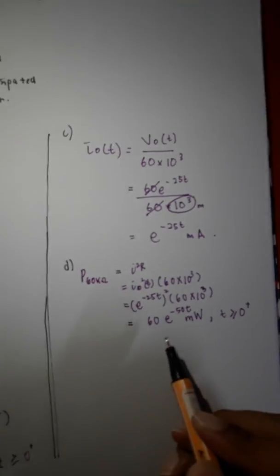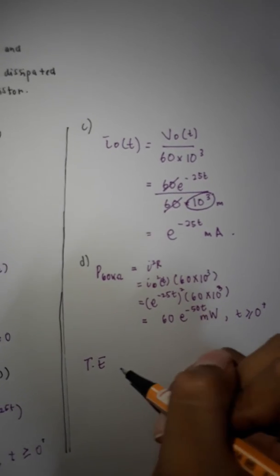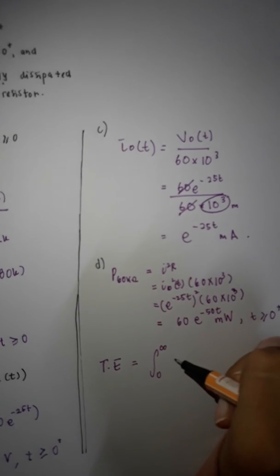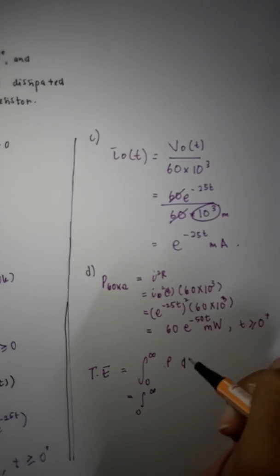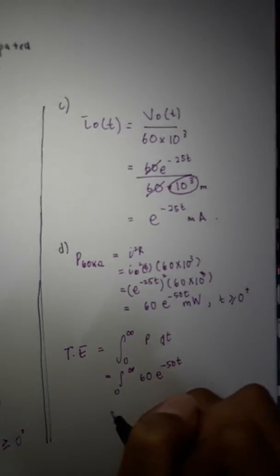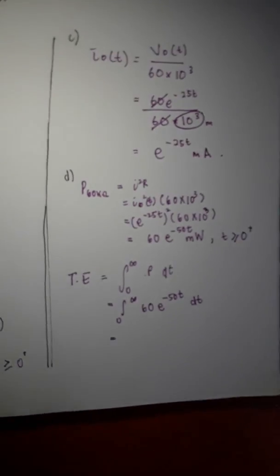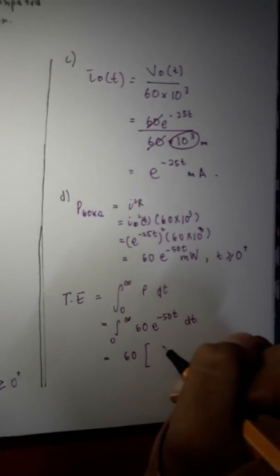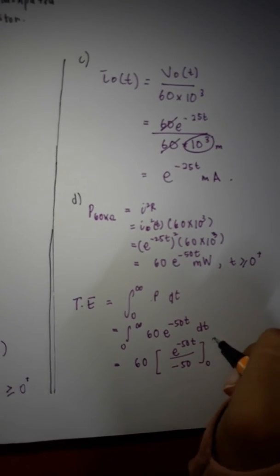Since we have the power, we can get the energy. So, the total energy distributed in the 60 kilo ohm. The formula, we can just integrate the power. So, we put power here. So, 60 exponent 50T. We integrate the exponent negative 50T. We get exponent negative 50T over negative 50. From zero to infinite.